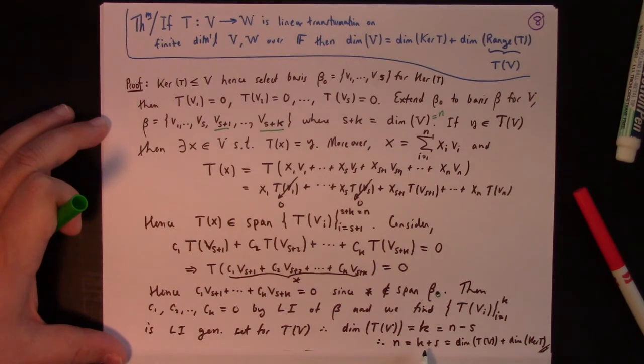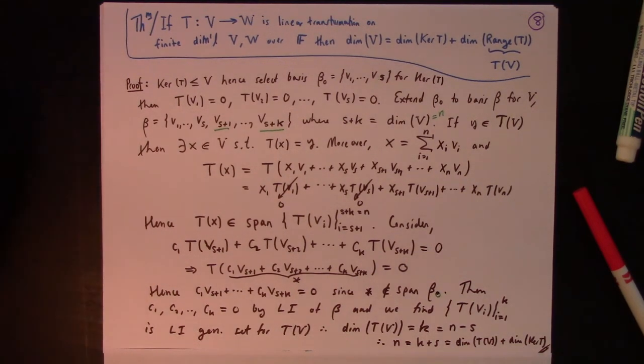n is equal to the dimension, k plus s, which is the dimension of the image, plus the dimension of the kernel. And that, folks, is the rank nullity theorem.